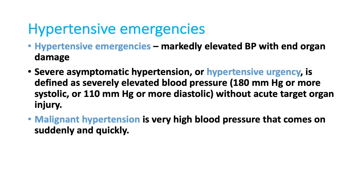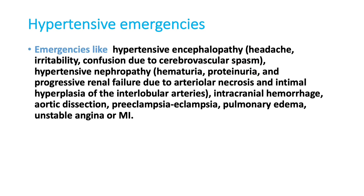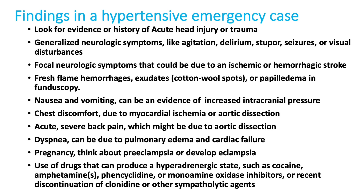Examples include a patient with high BP and flash pulmonary edema, or high BP with supraventricular tachycardia. The classical hypertensive emergencies seen in the emergency room are hypertensive encephalopathy, hypertensive nephropathy, intracranial hemorrhages, acute ischemic stroke, aortic dissection, preeclampsia and eclampsia, flash pulmonary edema, and unstable angina or myocardial infarction associated with high BP.